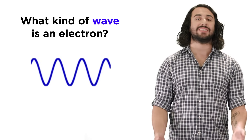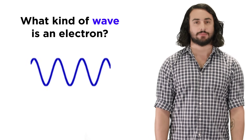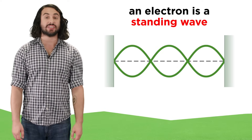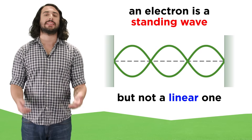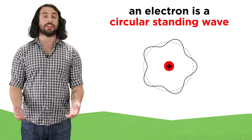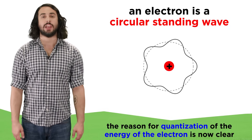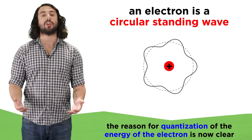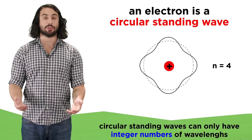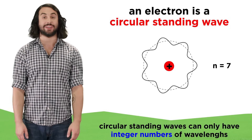Therefore we must discuss the wave nature of the electron — so what kind of wave might this be? We can regard an electron in an atom as a standing wave, just like the kind we learned about in classical physics, except that rather than something like a plucked guitar string, an electron is a circular standing wave surrounding the nucleus. If we understand this, it becomes immediately apparent why quantization of energy applies to the electron, because any circular standing wave must have an integer number of wavelengths in order to exist.